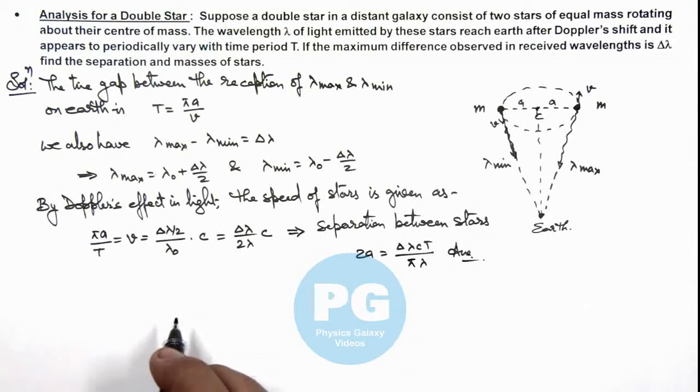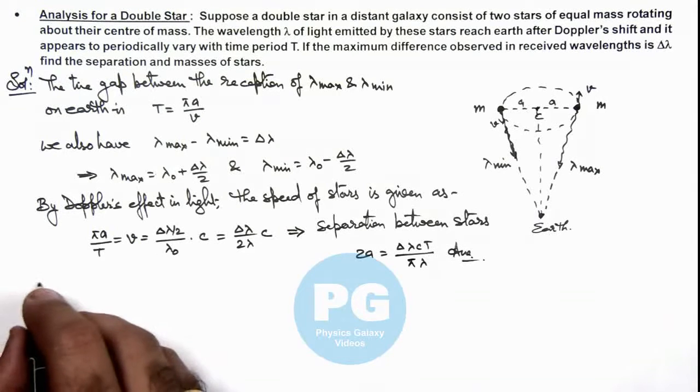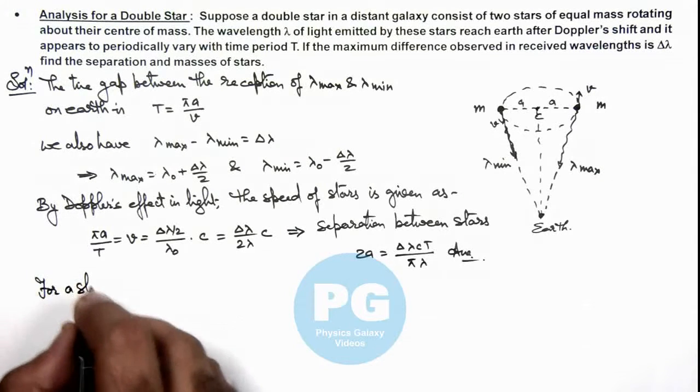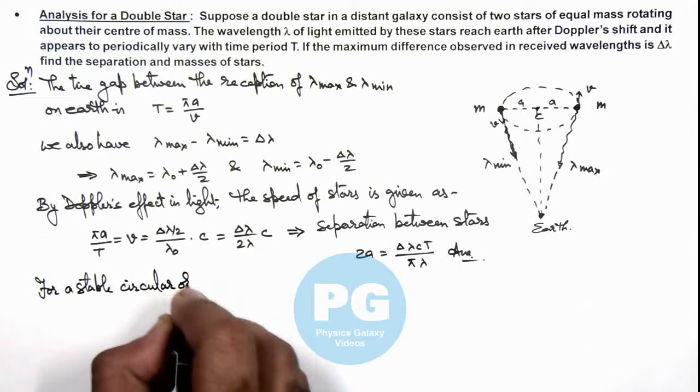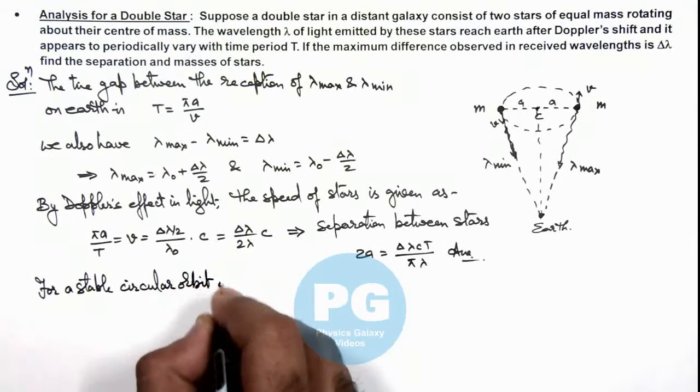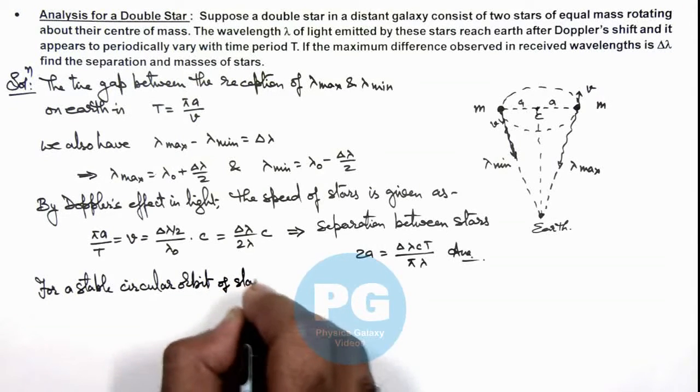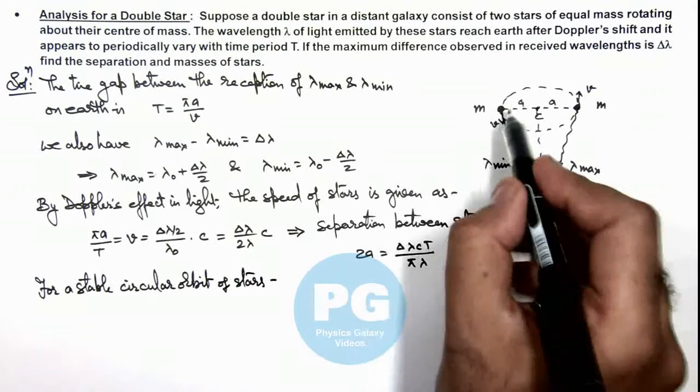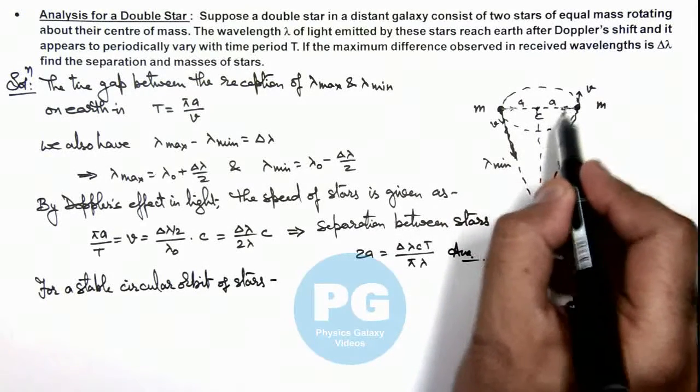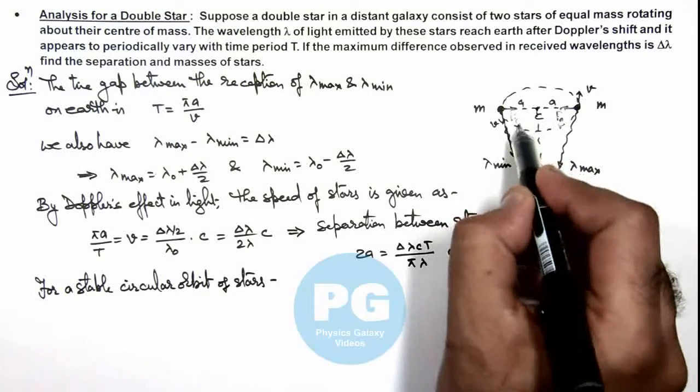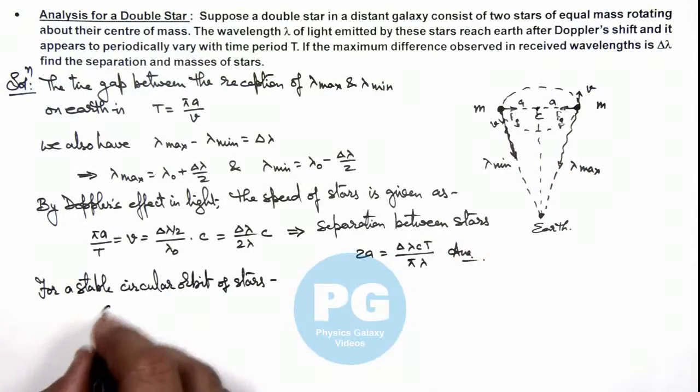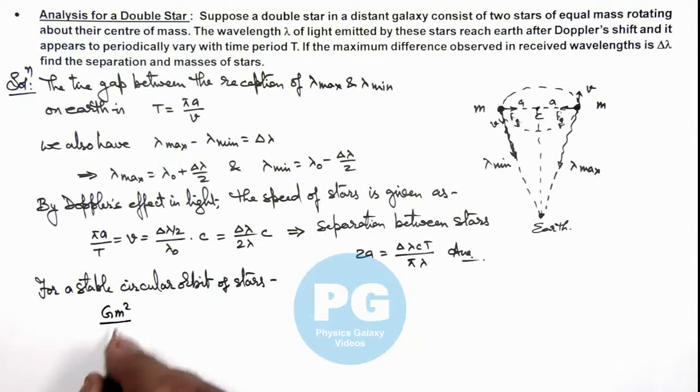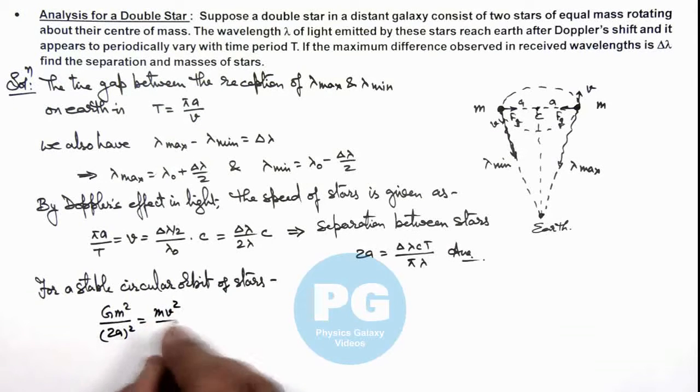We can use for a stable circular orbit of stars, here we can write the gravitational force acting between the 2 is imparting the necessary centripetal force for the stable circular motion. So here we can write Gm²/(2a)² should be equal to mv²/a.